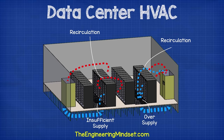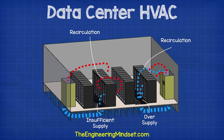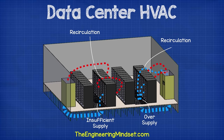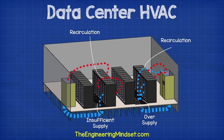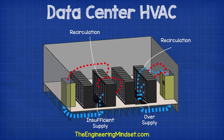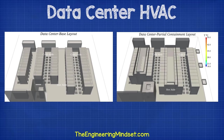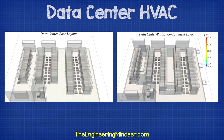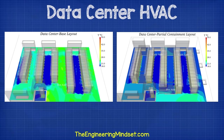If more cold air is supplied than needed it will flow over the units and mix with the discharge line. If insufficient cold air is supplied then warm discharge will be pulled over the top and around the side of the server and into the cold aisle and will mix with the stream. We're going to look at some CFD simulation examples shortly of this occurring.